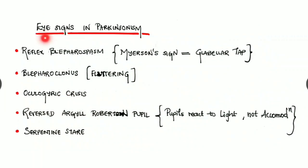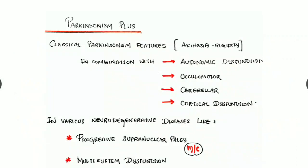There are some significant eye signs in Parkinsonism. They are reflex blepharospasm, which is known as the Myerson sign, demonstrated by glabellar tap. There can be blepharoclonus, which is the fluttering of the eyelids. As we have seen before, there is oculogyric crisis. Next there is reversed Argyll Robertson pupil, which means the pupils react to light but not to accommodation. In simple Argyll Robertson pupil, this is just opposite - the pupils are constricted, not reacting to light, whereas the accommodation is intact. Lastly, there can be a serpentine stare.